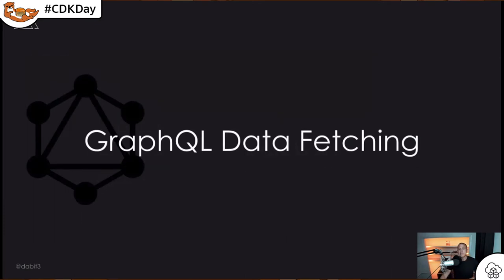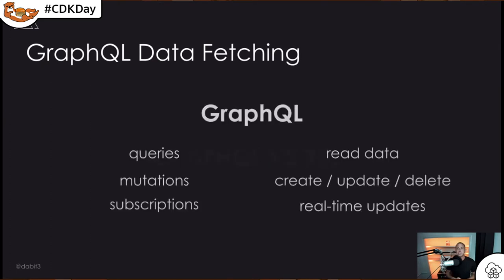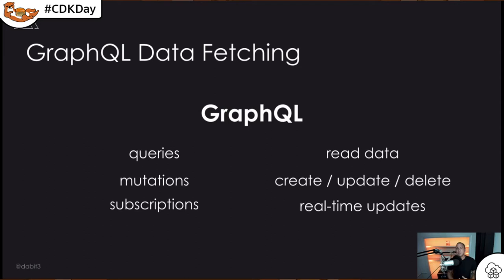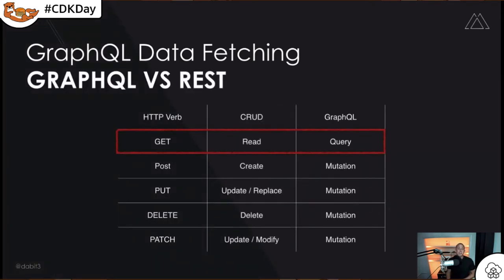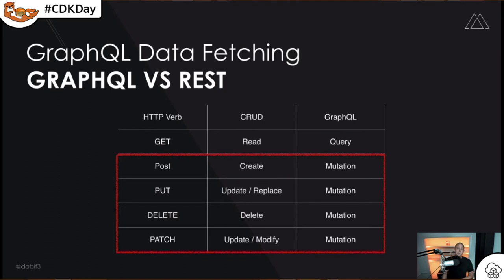In GraphQL, we have queries, mutations, and subscriptions, which map well to HTTP requests. A query is typically reading data; a mutation is creating, updating, or deleting data; and subscriptions handle real-time updates. A GET request maps to a GraphQL query, while POST, PUT, DELETE, and PATCH all map to GraphQL mutations. Once you know that, you're good to go as far as the theoretical ideas around data fetching in GraphQL.